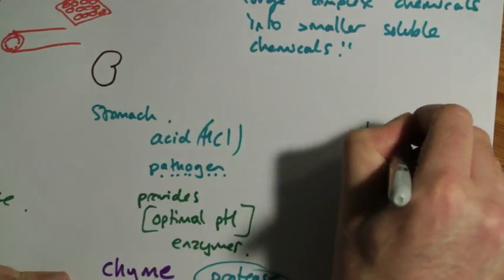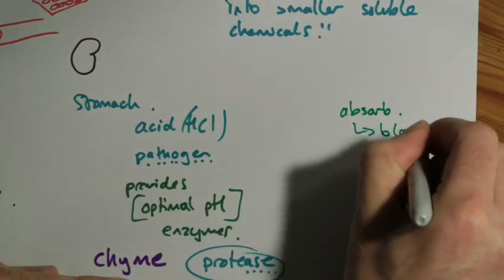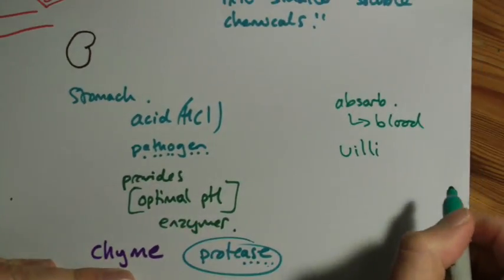So it's absorbed in the small intestine as well. Once it is soluble you can absorb it into the blood. This is done through structures called villi.